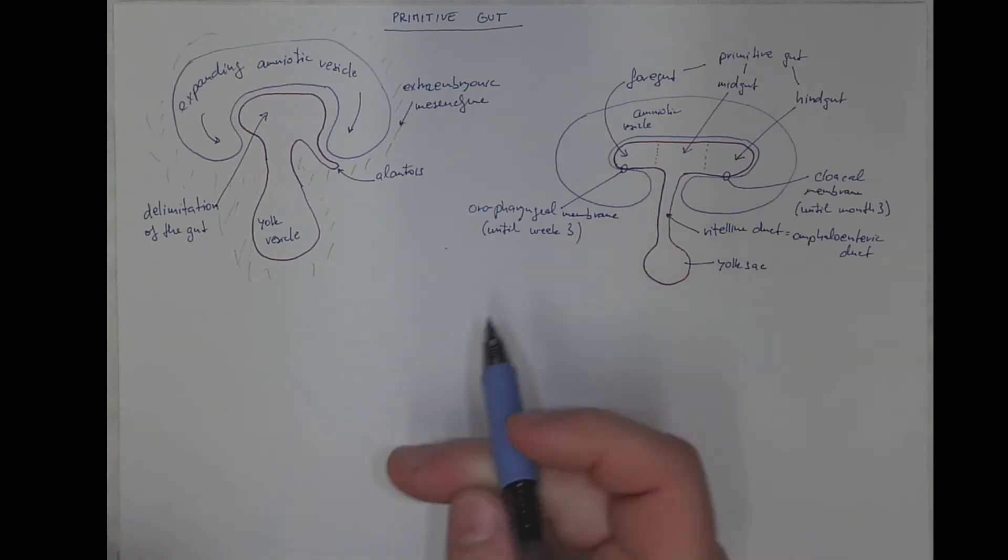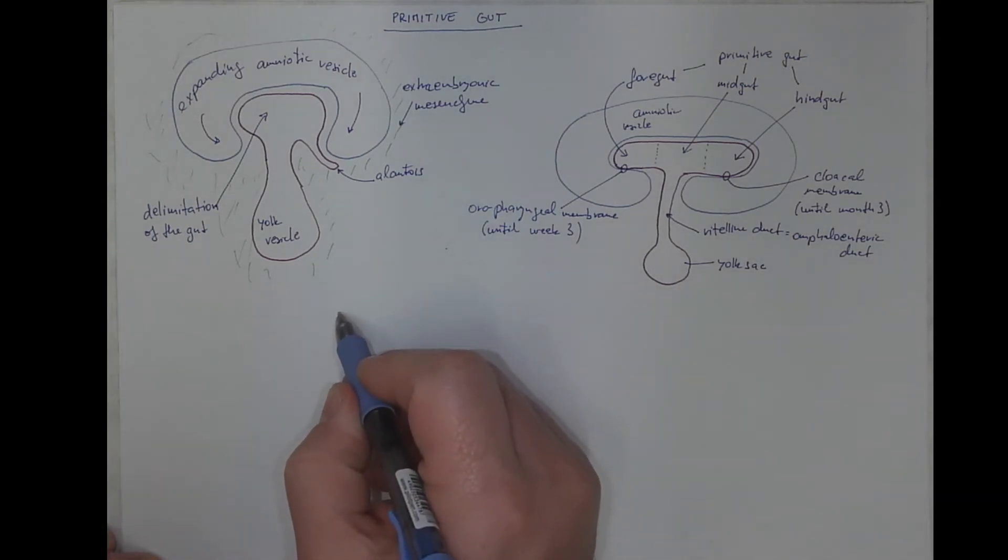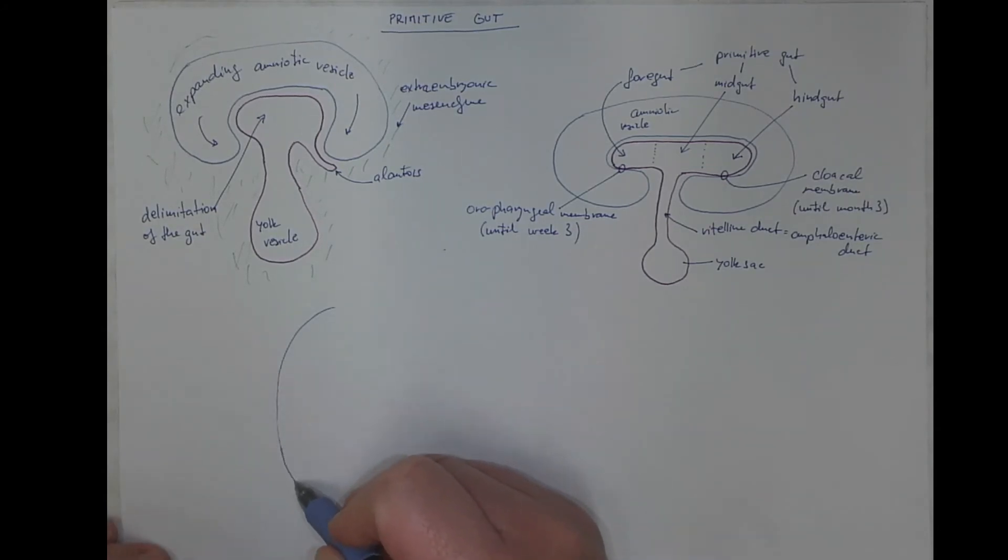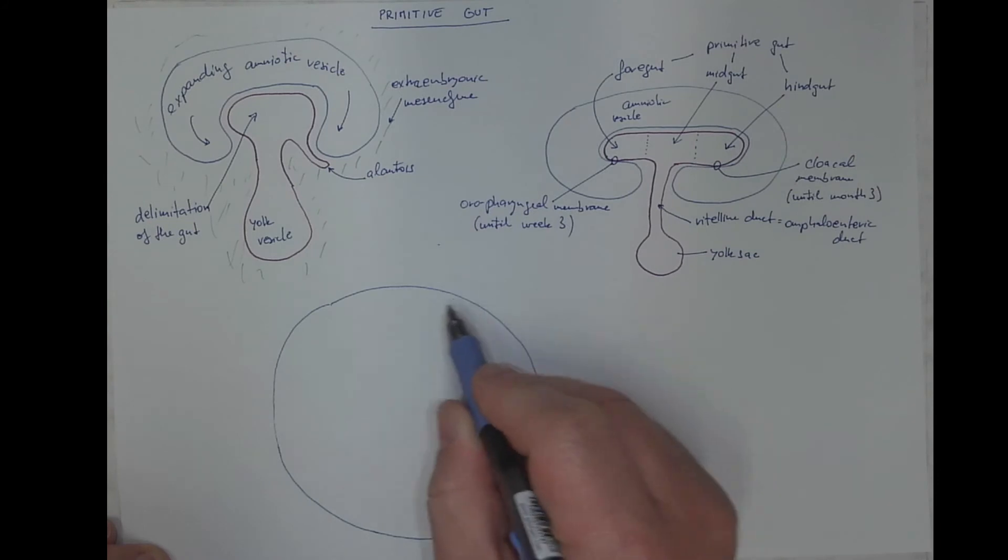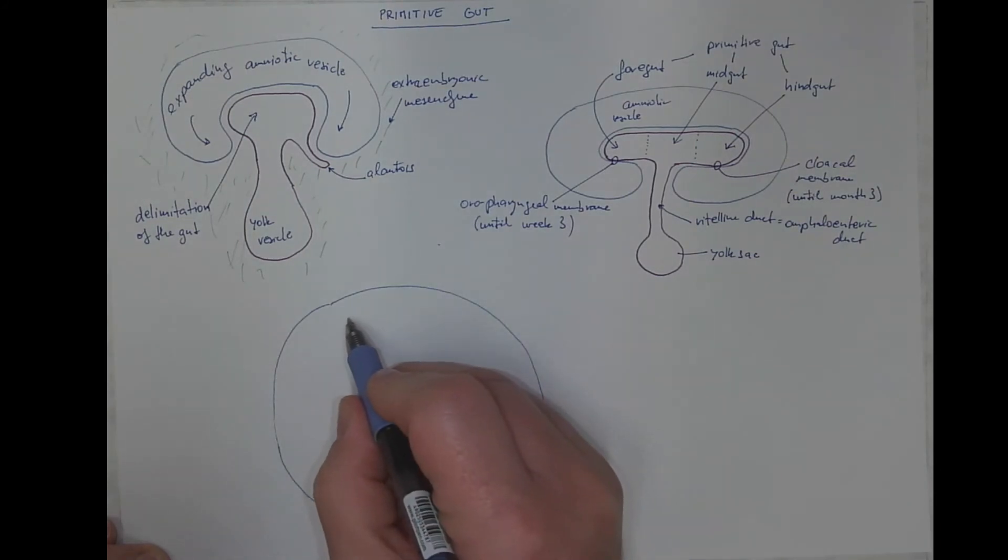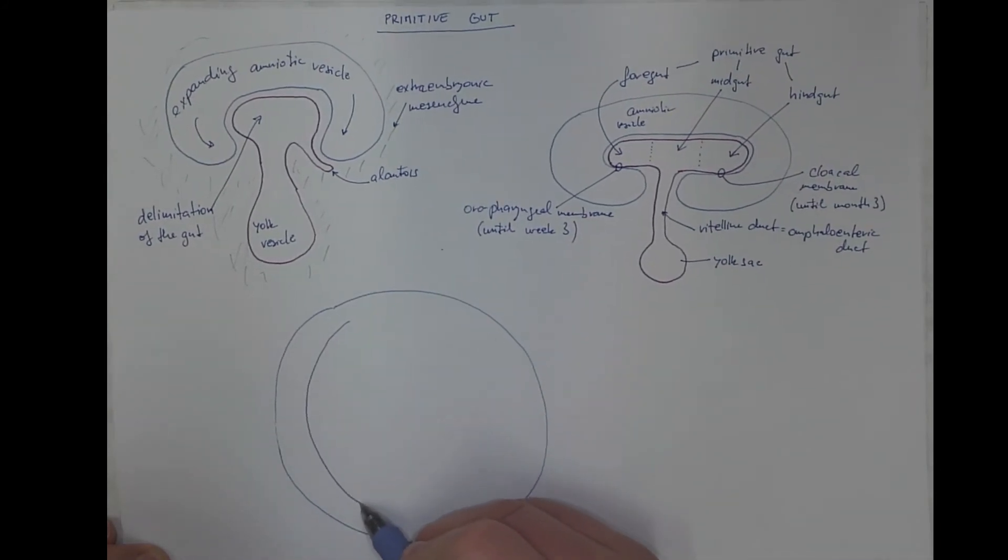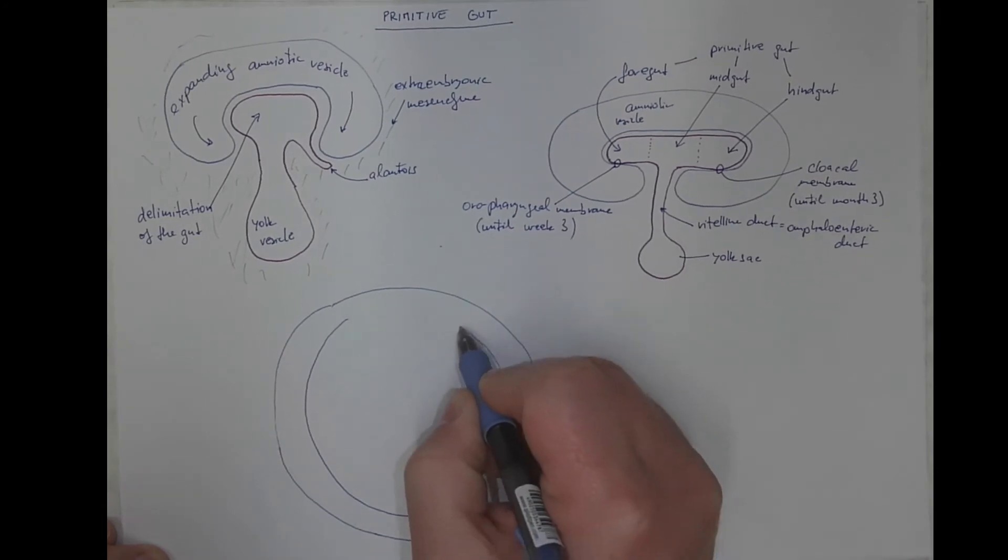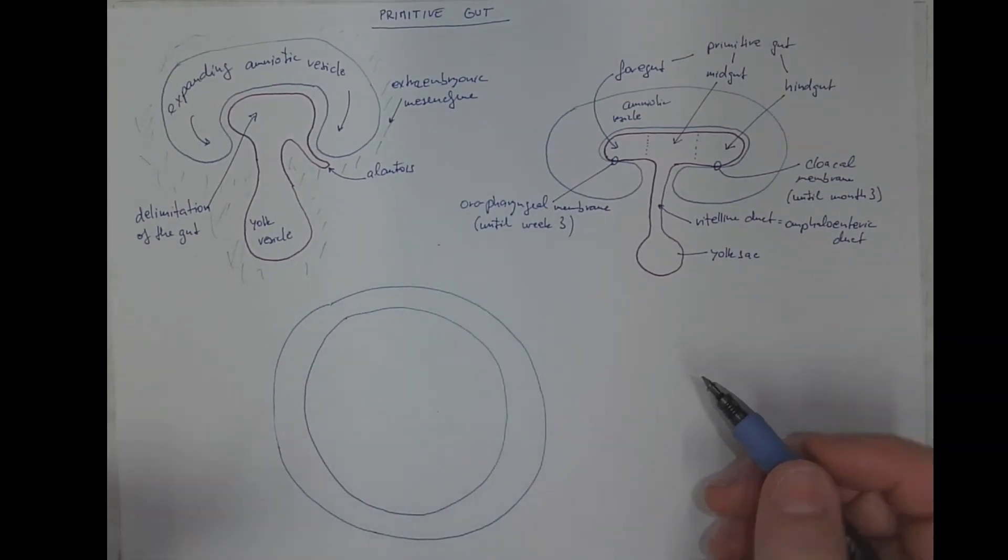So in a cross section through the embryonic body and the amnion, the inner fetal membrane, we will see the amnion, then the amniotic cavity, then the surface body of the ectoderm.